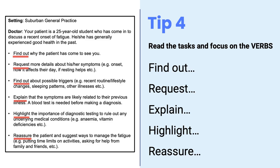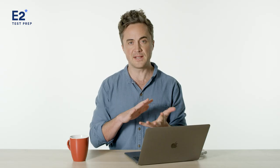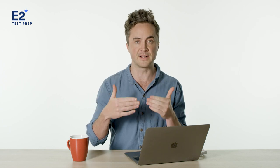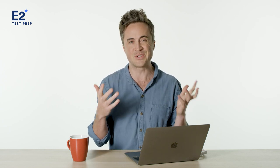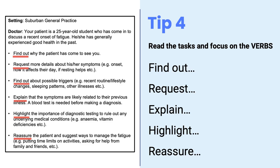Tip number four is to read the tasks. You'll get to hold the roleplay card during the preparation time and also during the roleplay as well. You won't be able to memorize all of these tasks and you don't really need to — more than likely you'll forget a bit of the information by the time the roleplay starts, and that's completely fine. What you really need to do is focus on the verbs in the tasks. For example, the verbs in these tasks ask you to find out, request, explain, highlight the importance of something, or reassure. These verbs will basically tell you what you need to do. If you need to highlight the importance of something, you might use words like 'It's critical that you' or 'It's really important that.' So keep those key verbs in mind and let them drive the roleplay forward.